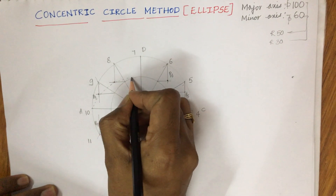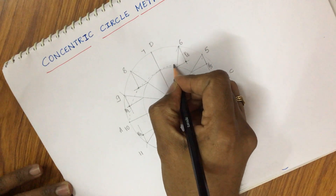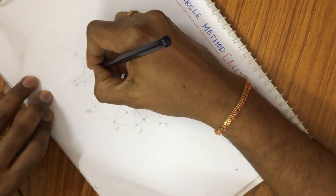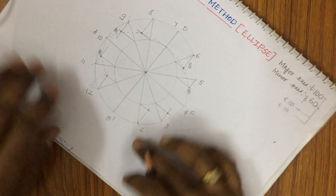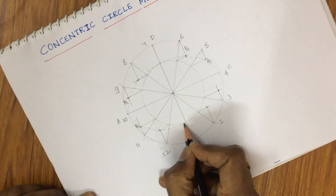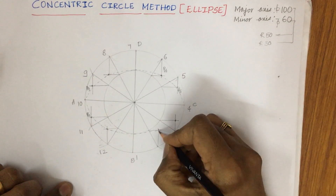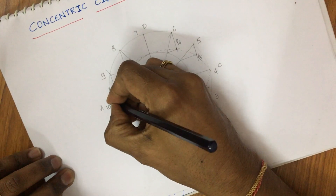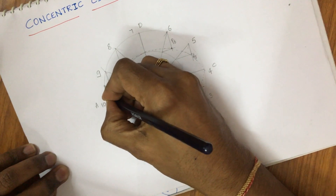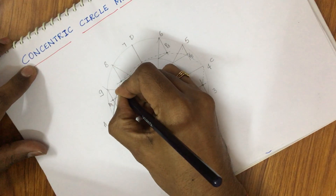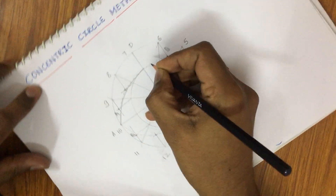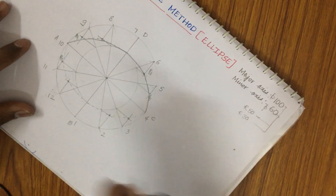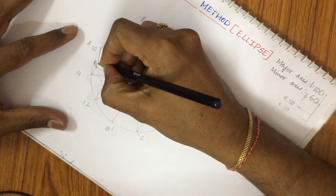If you look here, dear students, you have several points of intersection. You can connect all these points using a freehand curve or a French curve. If you are good at freehand, try to work it out freehand, making dots touching all these points all the way to the internal circle. This gives us the construction of the ellipse using the concentric circle method. Join all these points so that the final curve traced is the ellipse.